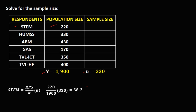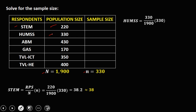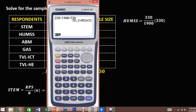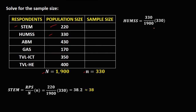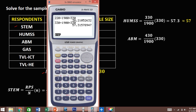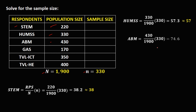Since the sample size must be a whole number, STEM is approximately 38. For HUMS, the population size is 330: 330 divided by 1900 times 330 gives 57.3, so approximately 57. For ABM, the population size is 430: 430 divided by 1900 times 330 gives 74.6, approximately 75.